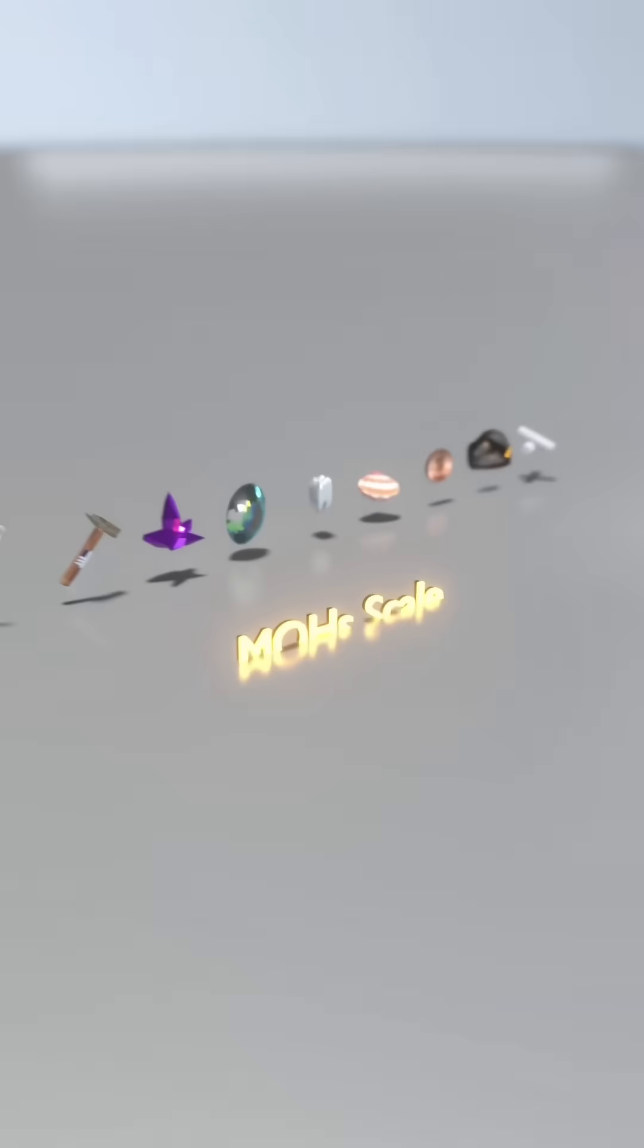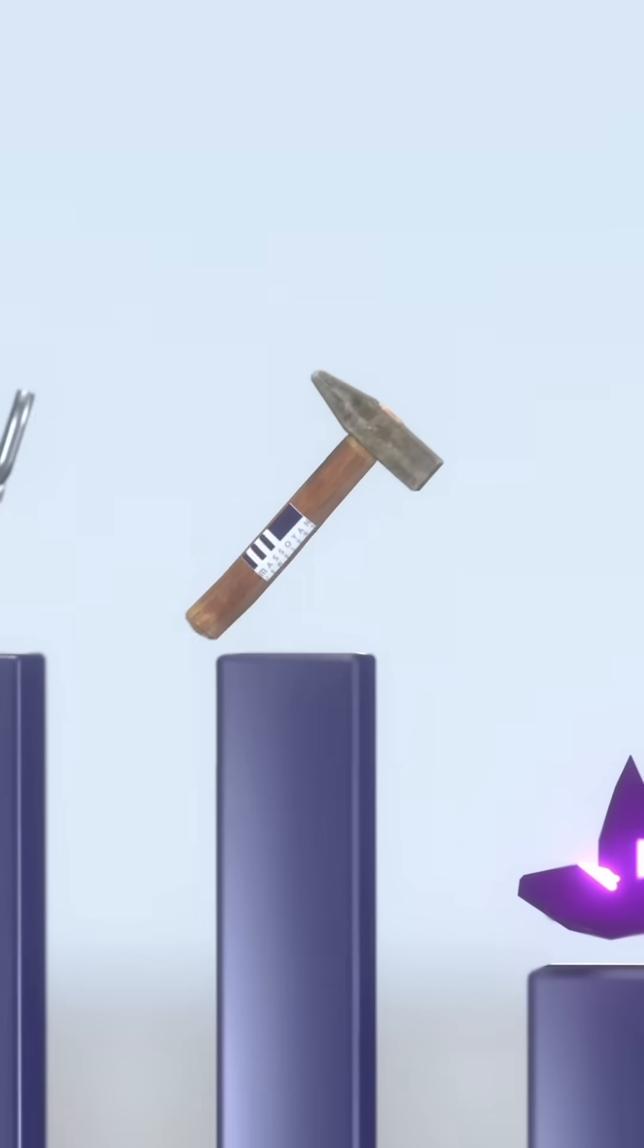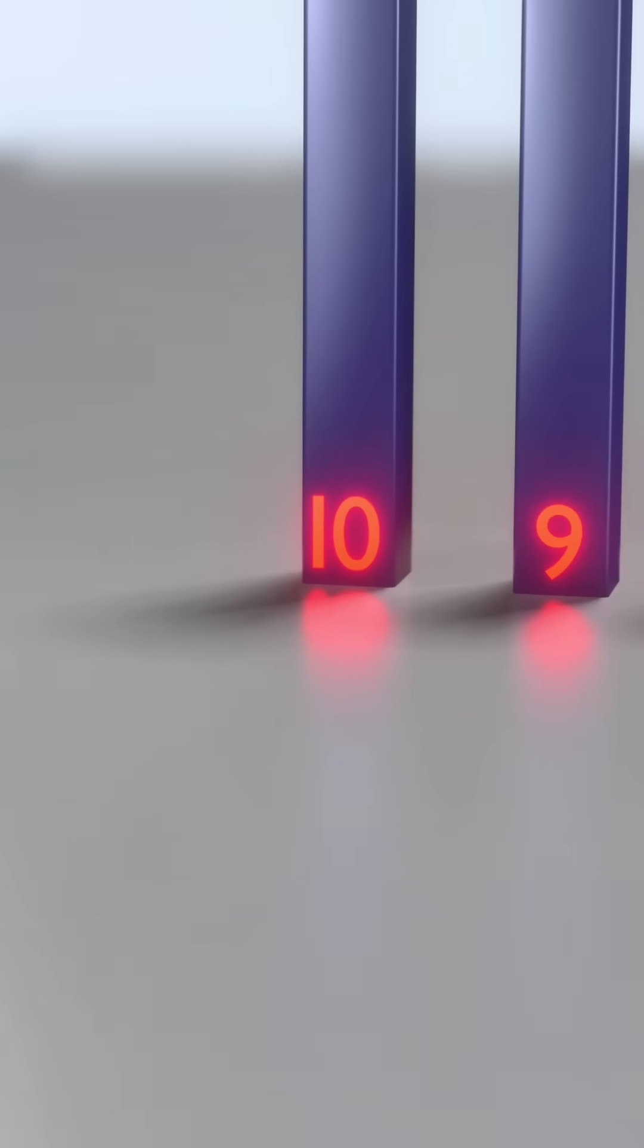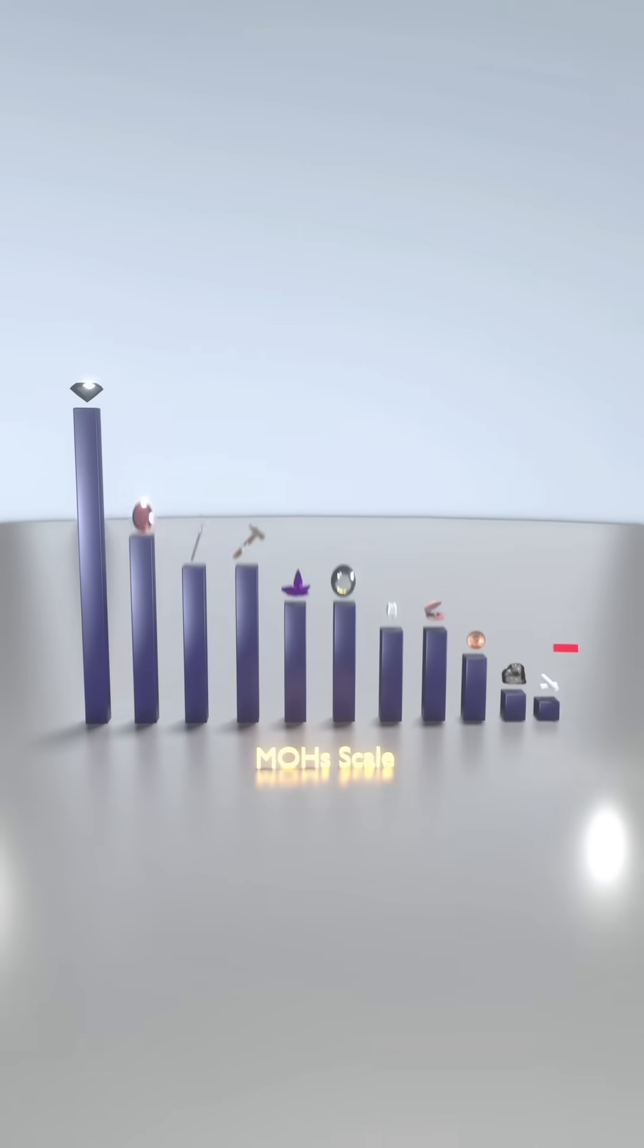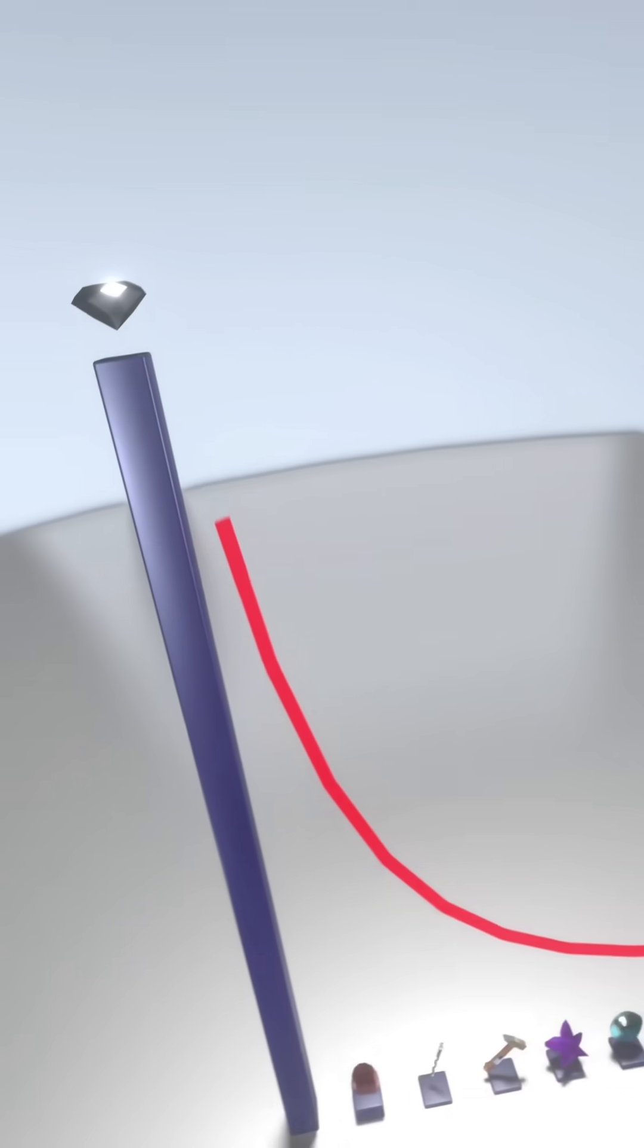Now the reason that happened is because diamond is a level 10 on the Mohs hardness scale, and my hammer is around a 7. The scale only goes up to 10, and it's not a linear scale. It's ordinal, meaning diamond is actually 100 times harder than tool steel.